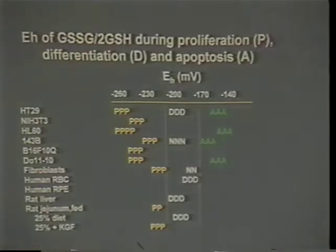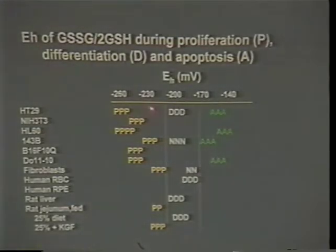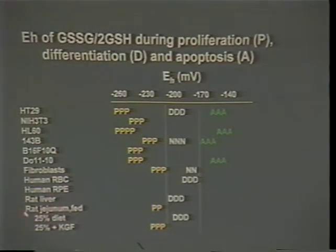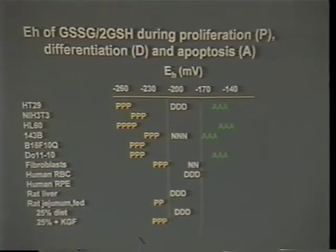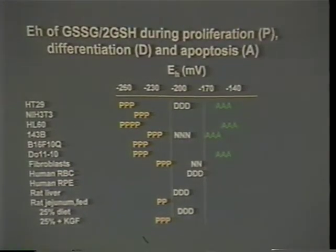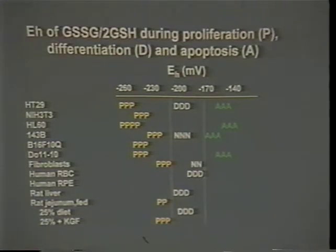This same type of shift is seen in vivo - in starved and refed rats, there's a similar shift. In vivo you have a mixture of cell types, some dividing and some not, so it's not quite as clean, but the shift is clearly there nonetheless. The concept then is that at the cellular level, this glutathione redox potential could provide us with a mechanism for what we call context-dependent regulation.